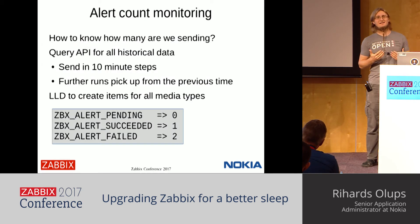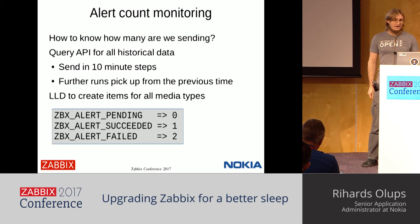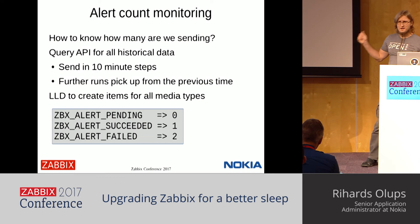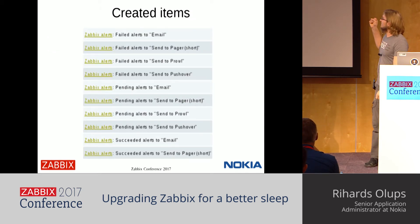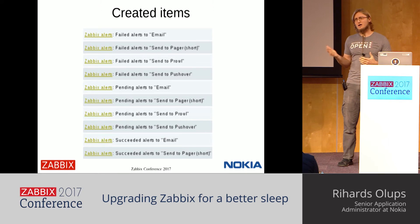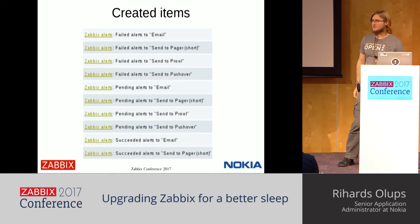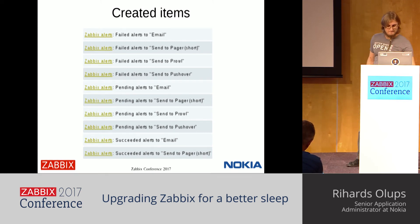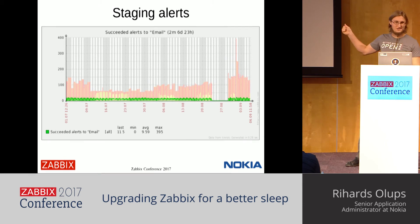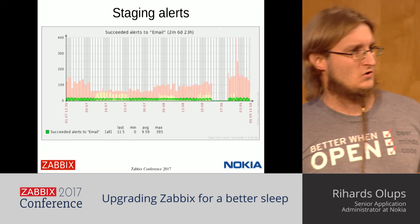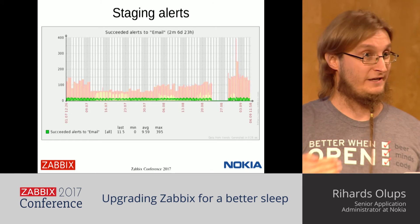Another thing is tracking how many alerts we're actually sending out and how that changes over time. Using the API, we query and send data in 10-minute steps to Zabbix, using low-level discovery to discover all media types and message statuses, which automatically creates items. For notifications we use Pushover and Prowl. We don't use PagerDuty because it tries to take over everything — escalations, issue tracking, chat, email. It's like systemd of notifications. This shows the alert counts per 10-minute window from our staging system — quite noisy — but we can identify changes that made it noisier.